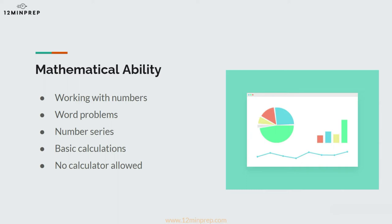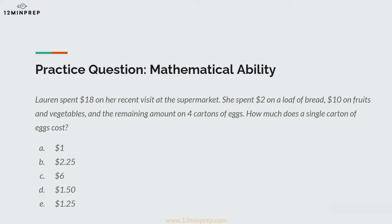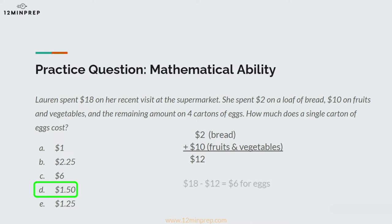Let's take a look at a sample question. Lauren spent $18 on her recent visit at the supermarket. She spent $2 on a loaf of bread, $10 on fruits and vegetables, and the remaining amount on 4 cartons of eggs. How much does a single carton of eggs cost? The correct answer is $1.50. First, calculate how much was spent on the eggs. We know Lauren spent $2 on the loaf of bread and $10 on fruits and vegetables, for a total of $12. Since she spent $18 in total, that leaves $6 spent on eggs. Dividing 6 by 4 cartons gives us $1.50 per carton of eggs.